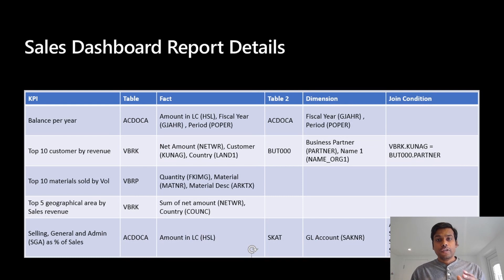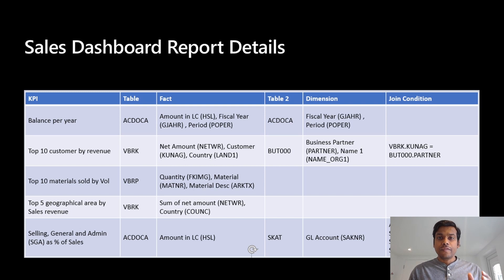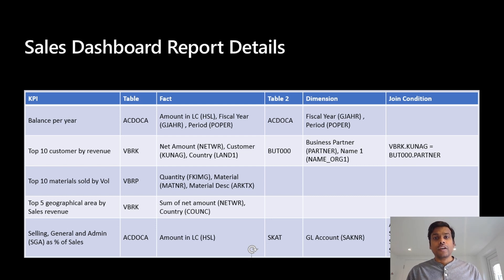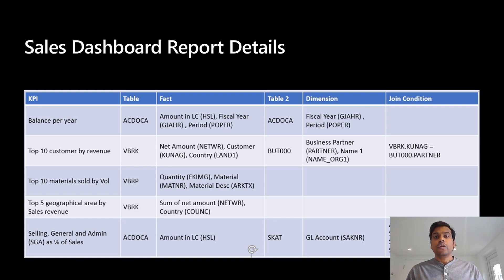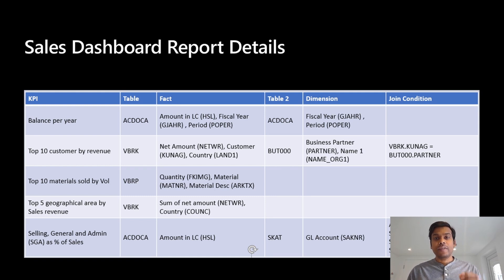For the source system we are using SAP S4 HANA 2020. The information that we are gathering is balance per year, selling journal and admin as percentage of sales from the universal journal table, top 10 customers by revenue, and top 10 materials sold by volume from tables like VBRK and VBRP.